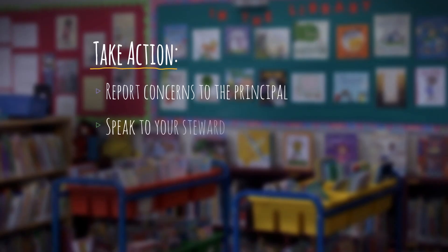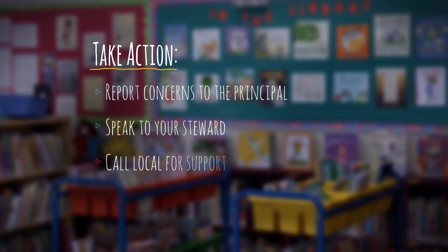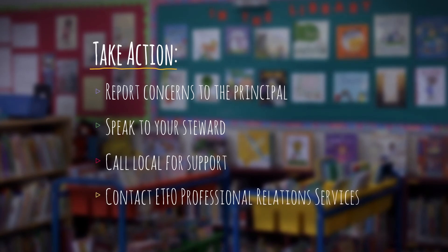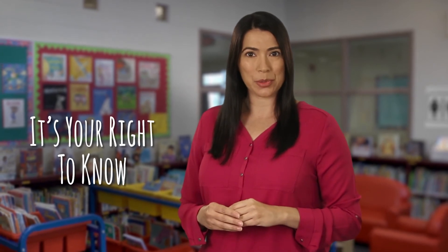This information needs to be shared as soon as possible before you may encounter that person. If you're concerned about the development or use of a risk assessment or safety plan, report your concerns to your principal. You can also speak to your steward if your concerns aren't addressed, or contact your local or PRS. It comes down to this: assessments of the risks of violence, safety plans, and your right to know about a person with a history of violence — we shouldn't settle for anything less. Learn more through ETFO.